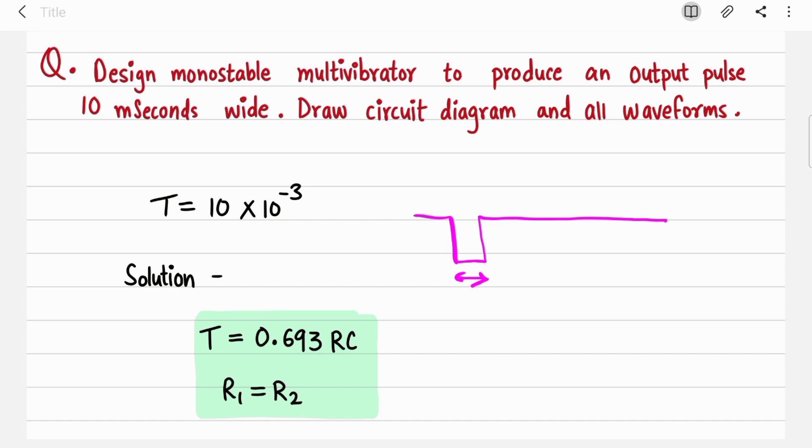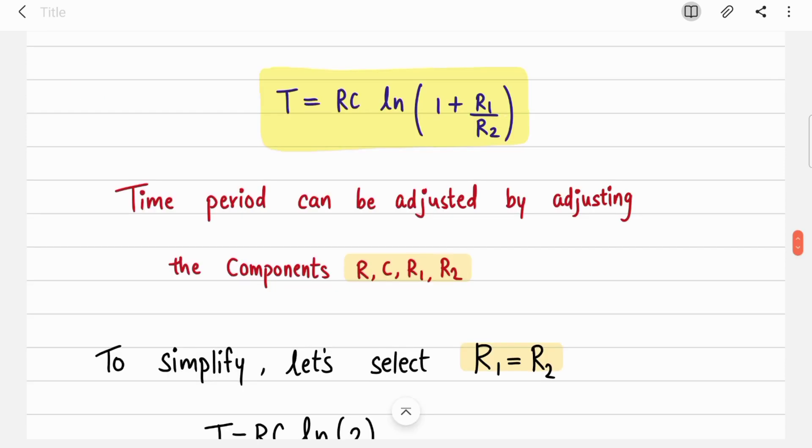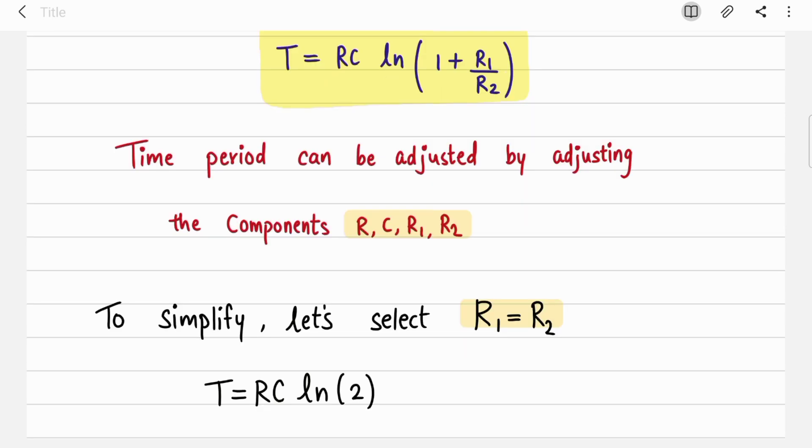You should know just two equations and you are good to solve these types of questions. I'm going to cover the derivation in another video. This video is just for numericals. So this is the important equation: time period T = RC ln(1 + R1/R2). And if you want to simplify it further, you can assume R1 is equal to R2, so this factor will become 1, so 1 plus 1 becomes 2.